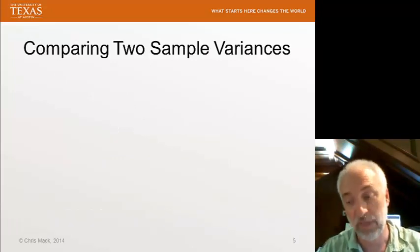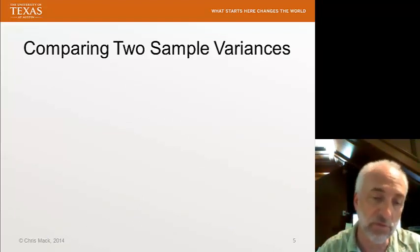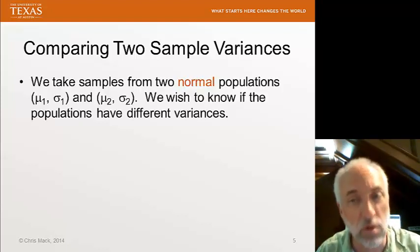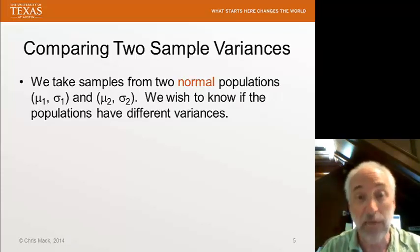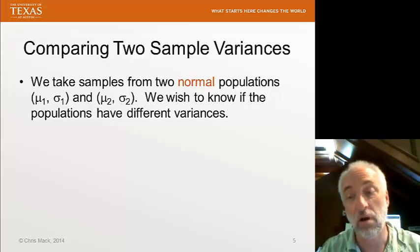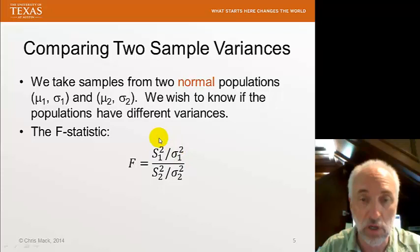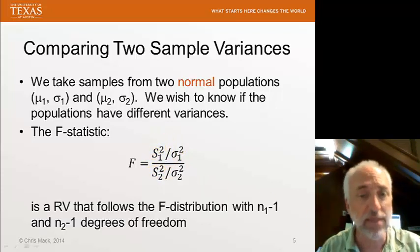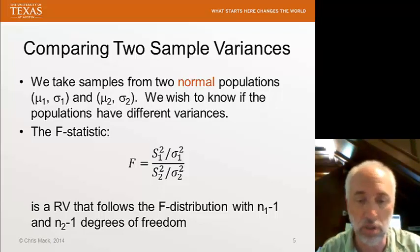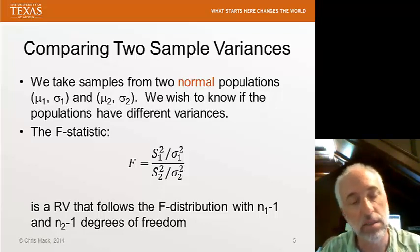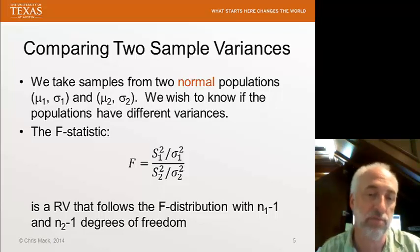Sometimes we want to compare two sample variances. I have two different treatments, two different experimental procedures, and I want to compare them and ask, is the variance of the samples different? If we assume we have normal populations with different means and different variances, and we want to test the hypothesis that the variances are different, we can use an F statistic. An F statistic is basically the ratio of the two sample variances. And this is a random variable that follows what's called the F distribution. And you can look up tables of the F distribution or spreadsheet programs and other programs have the F distribution built in. So you can calculate these statistics and do confidence intervals, et cetera, just as we've done before.